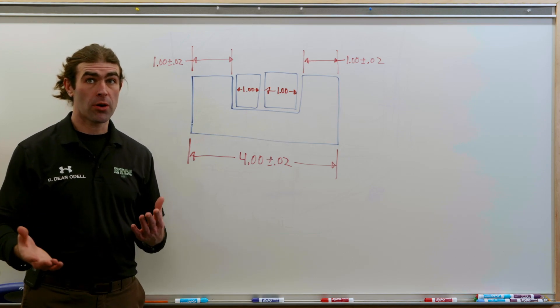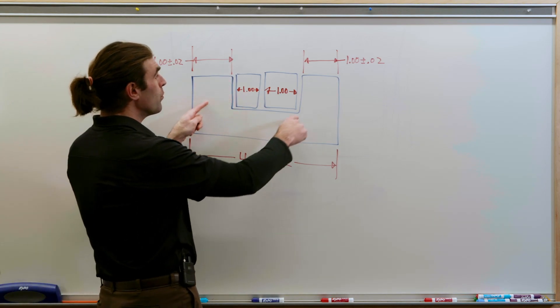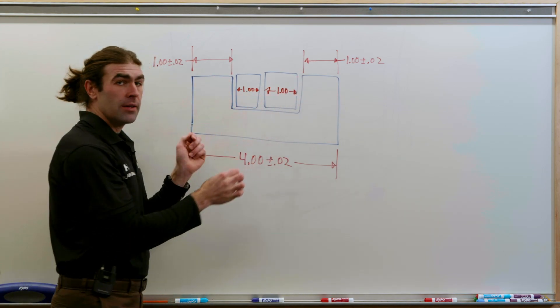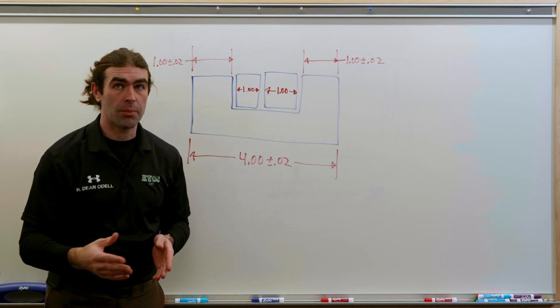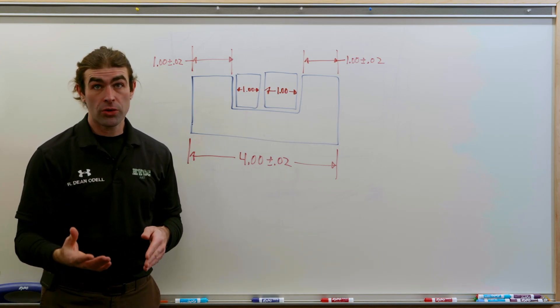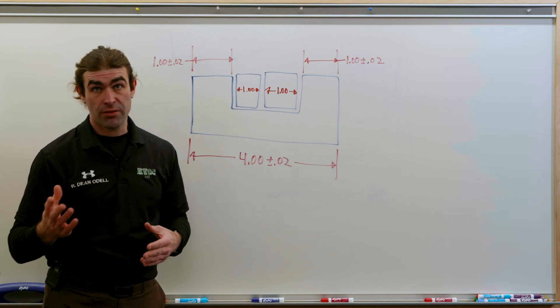I've got a simple assembly here, three parts. We've got this U-shaped part and then we want to fit two blocks within that part. Now I know it's painfully simple, but it's a good way to express how this stuff works.